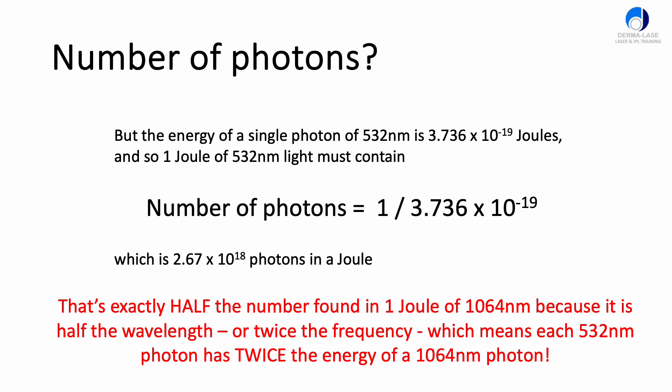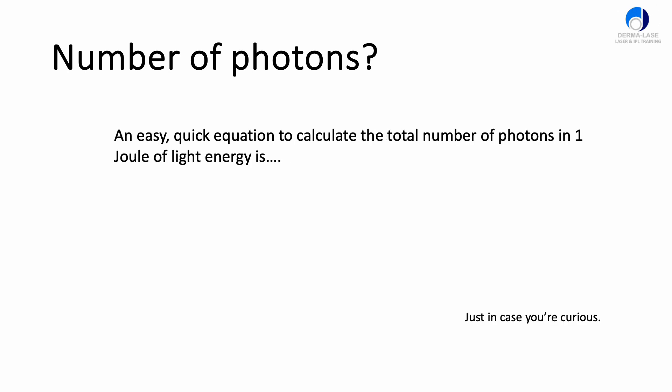If the frequency of the 532 photon is double the frequency of the 1064, then the energy of that individual photon of 532 must be twice the energy of a single photon of 1064. That's how we do these calculations. You might wonder why we're doing this. I'll show you why, in case you want to do this yourself.